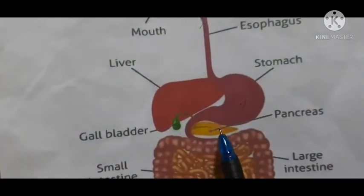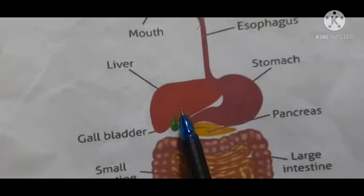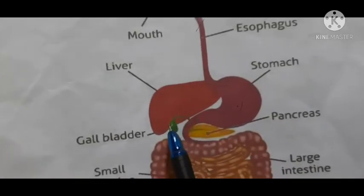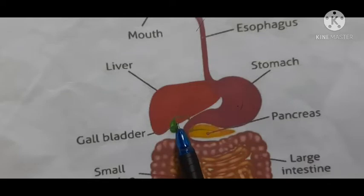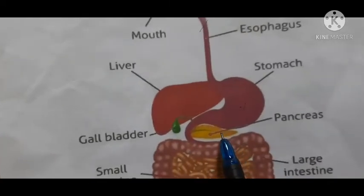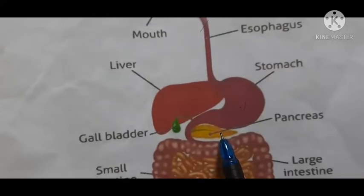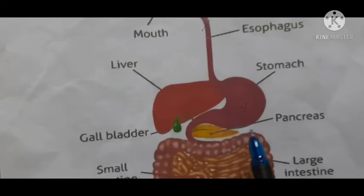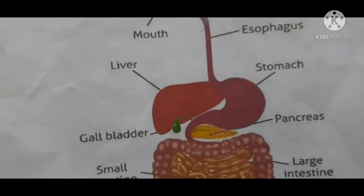The liver produces bile juice, which is stored in the gallbladder. The pancreas secretes pancreatic juice, which contains enzymes: amylase, trypsin, and lipase. Both the pancreas and the liver are glands and are part of the digestive system.